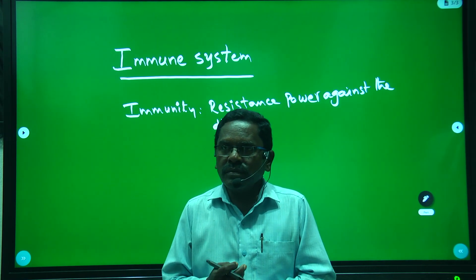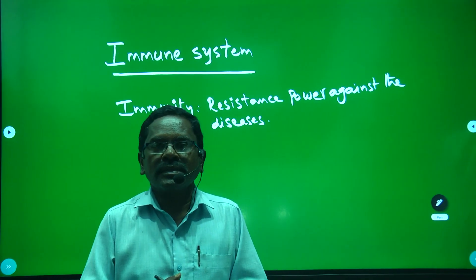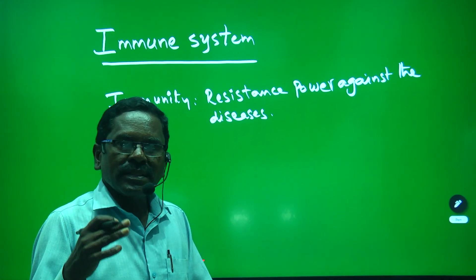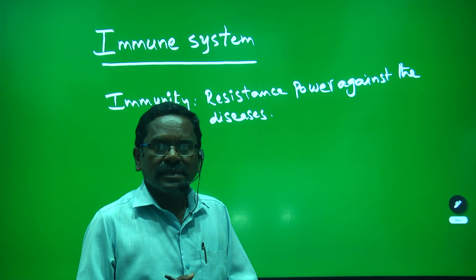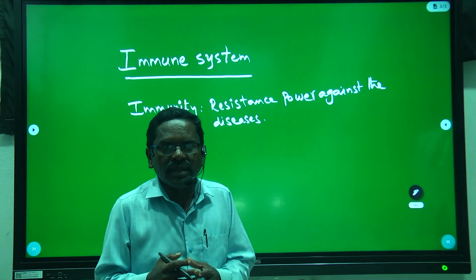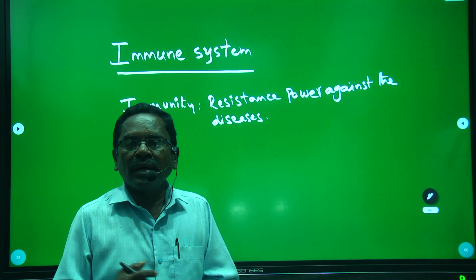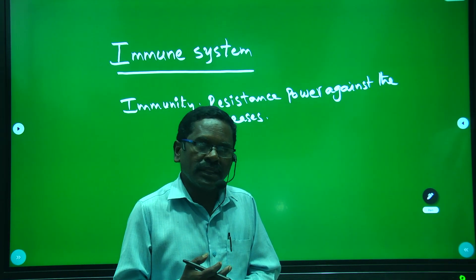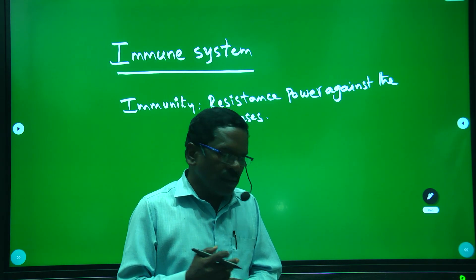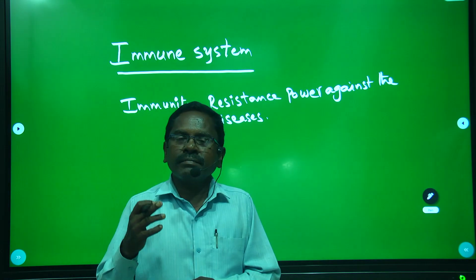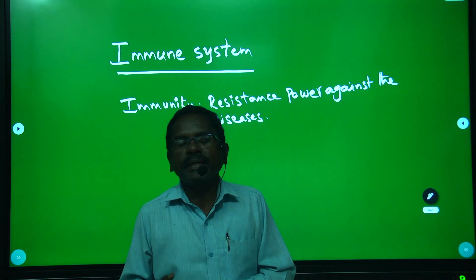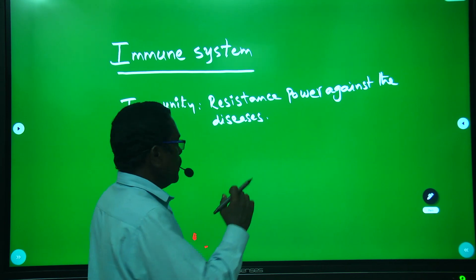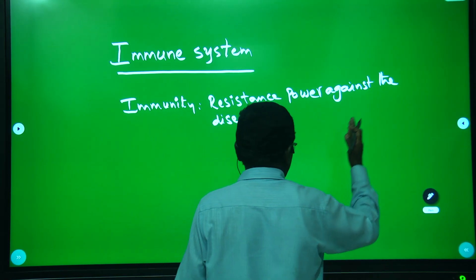Suppose if they escape from the second line, again the third line will be there, and in the third line they will be killed. So there are three lines of defense: first line, second line, third line. Even if they escape the third line, lymphoid organs will produce antibodies and kill the microbes.